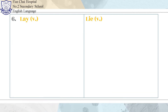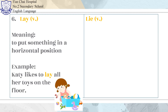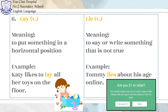Number 6: Lay and Lie. Lay means to put something in a horizontal position. Example: Katie likes to lay all her toys on the floor. Lie means to say or write something that is not true. Example: Tommy lies about his age online.